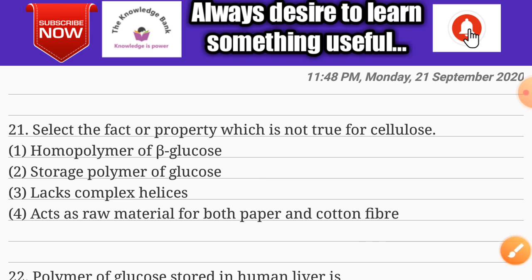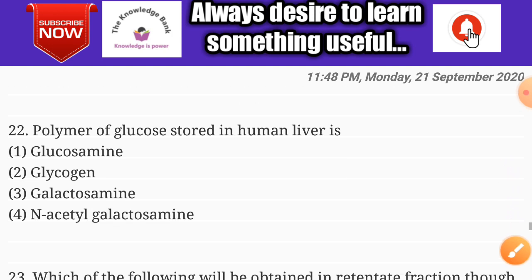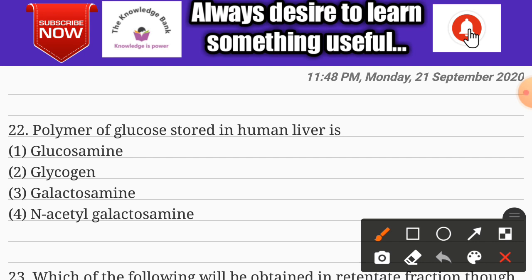Question number twenty-two: the polymer of glucose stored in human liver is — options are glucose, glycogen, glycosine, galactosamine, and N-acetyl galactosamine. The correct answer is option two: glycogen.